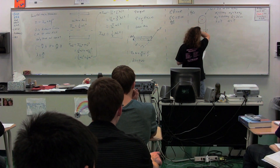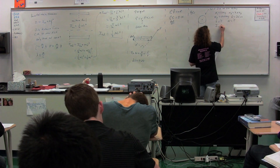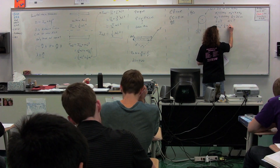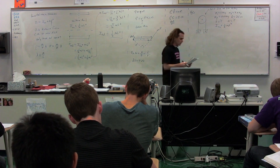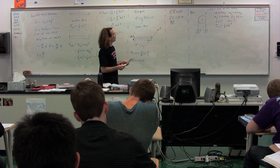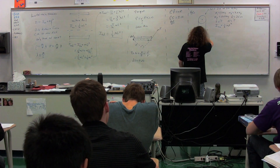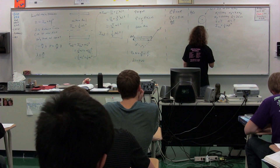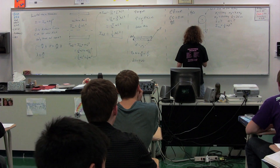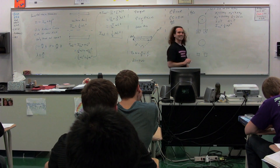So we have our pulley here — it's a solid disk. The moment of inertia about the center of mass of a solid disk is one-half mR squared. We are going to sum the torques, and in order to do so we need a free body diagram. Please give me the free body diagram of all the forces acting on all the various objects here.